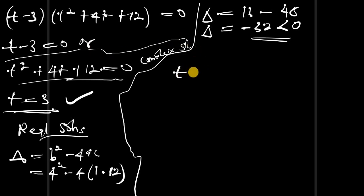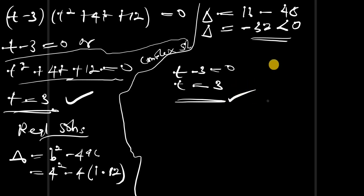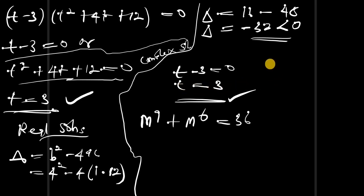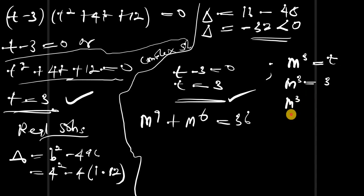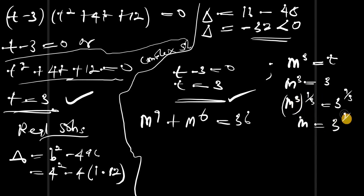The only real solution is t minus 3 equals zero, so t equals 3. Recall we had m power 3 equal to t, which means m power 3 equals 3. To find m, we raise both sides to the power of one over three: m equals 3 to the power of one over three, which is the cube root of 3. This is the only real solution for m.